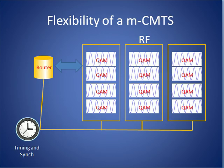The advantage of such an approach is that CMTSs can then be configured with various ratios of RF front end to routing.